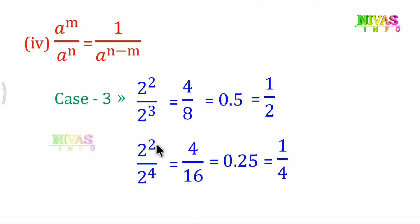Any number with exponent 0 equals 1. So a^0 = 1 for any base. We have covered all 3 types of situations for the division law.